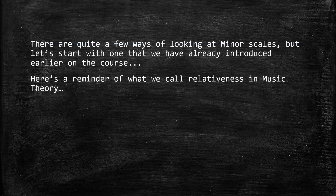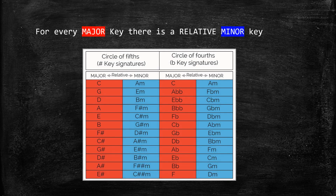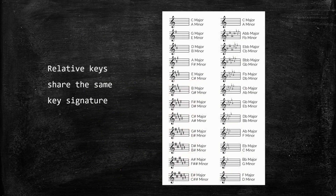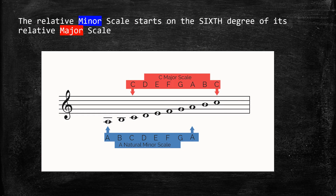There are quite a few ways of looking at minor scales, but let's start with one we've already introduced earlier on the course. Here's a reminder of what we call relativeness in music theory: for every major key there is a relative minor key. Relative keys share the same key signature.